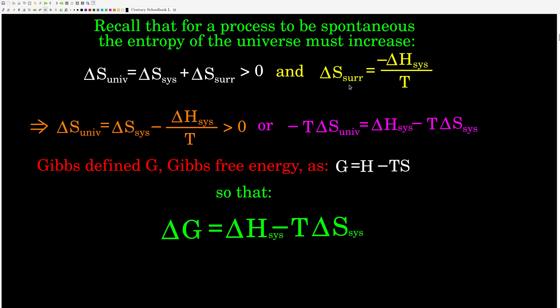On the other hand, if a process is exothermic, that means that the process releases thermal energy. Delta H is negative — negative times a negative is a positive. This T here is absolute temperature in Kelvin, so it's positive, which means that for an exothermic process, the change in entropy of the surroundings will be positive.